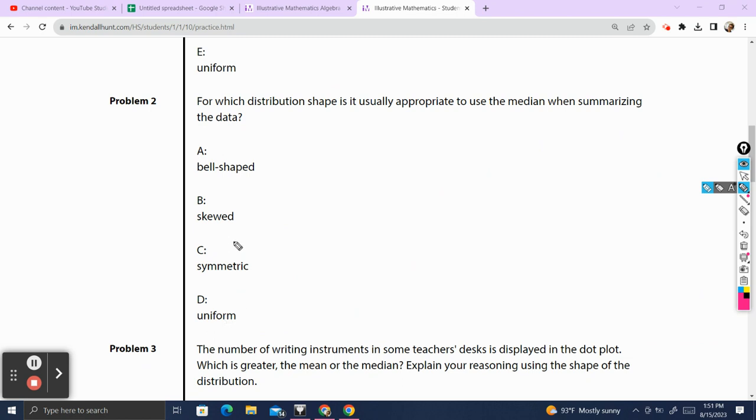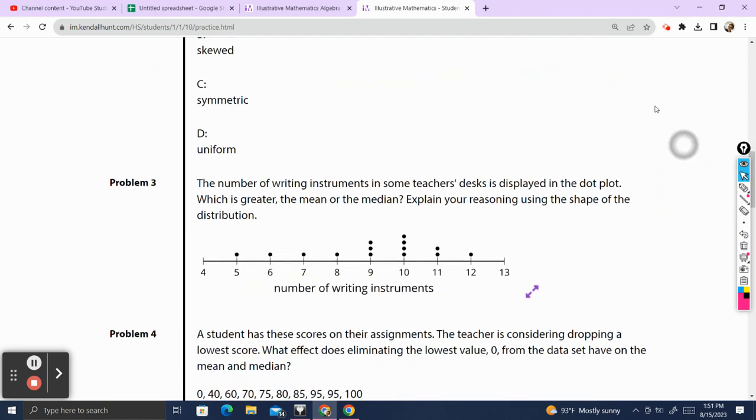However, in this case, I would circle skewed as my answer, just because we already just went over how we can use the mean for the bell, the symmetric, and the uniform. So when the mean doesn't work, we're going to go back to the median. So the median would be the best option for the skewed graph right there. Let's keep going.